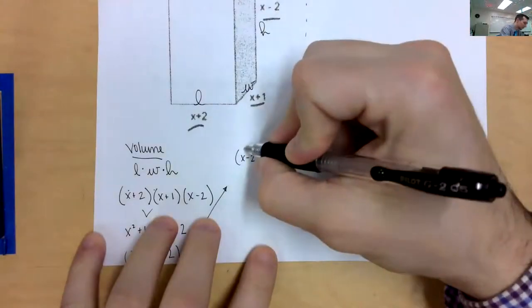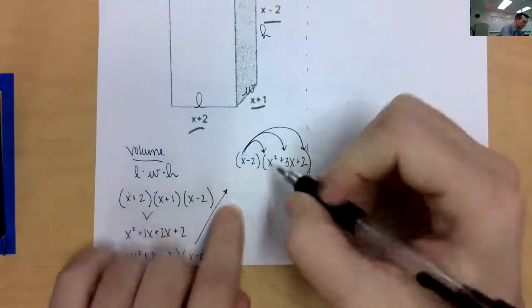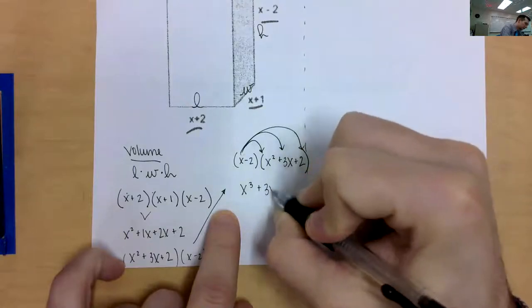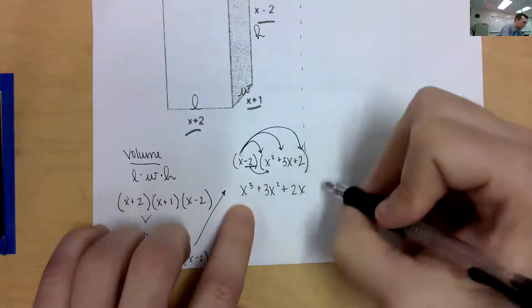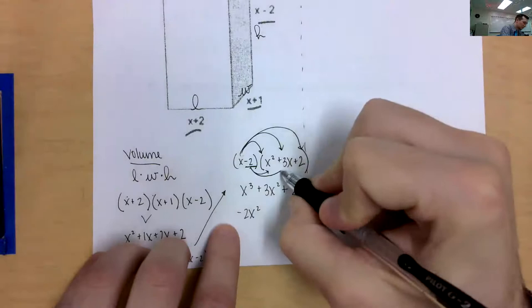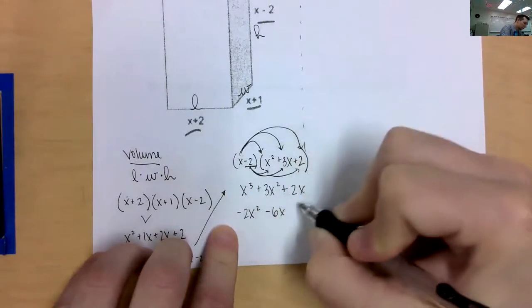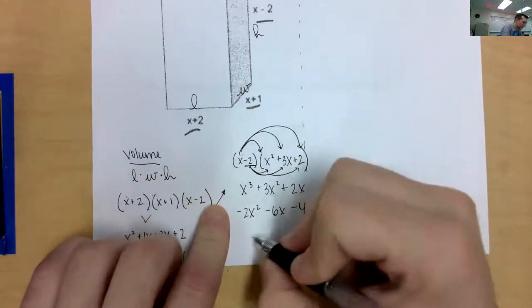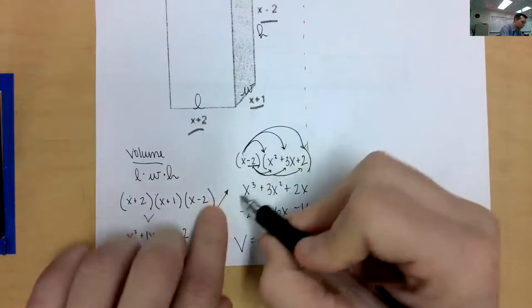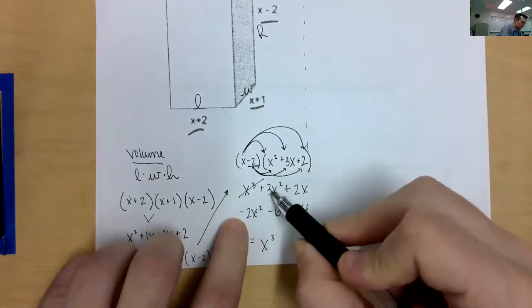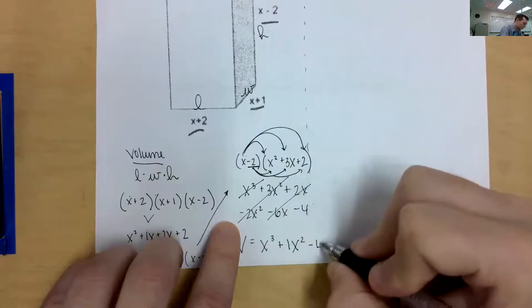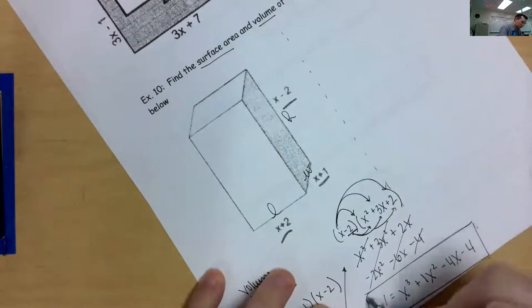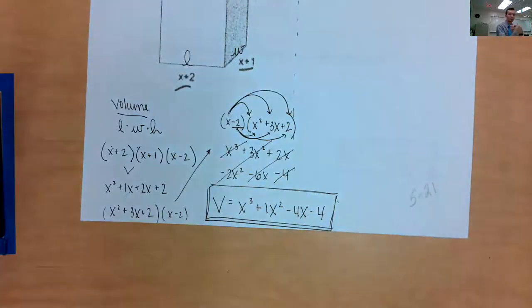Same idea — I have to double distribute. x times x squared is x cubed. x times 3x is 3x squared. x times 2 is 2x. Now distributing negative 2: negative 2 times x squared is negative 2x squared, negative 2 times 3x is negative 6x, and negative 2 times 2 is negative 4. Adding like terms: x cubed has no like terms. 3x squared and negative 2x squared gives 1x squared. 2x minus 6x gives negative 4x. And negative 4 has no like terms. Volume: x cubed plus x squared minus 4x minus 4. That is significantly easier — fewer steps than finding surface area.